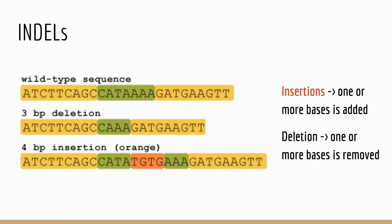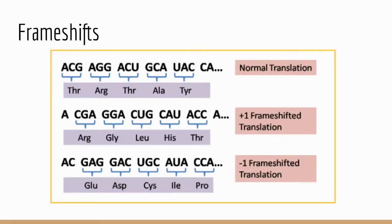Along with indels is the idea of frameshifts. Frameshifts happen when the reading frame is altered from what it's supposed to be. Here we have a plus one frameshift and a minus one frameshift. In the plus one frameshift, we moved the reading frame — which you can see by those blue brackets — one to the right, and now we're starting with a cytosine instead of an adenine, changing the amino acids being added to the protein. We can see the same thing in the bottom row, and understand how frameshifts are very detrimental to proteins because they change all of the amino acids that are being added.